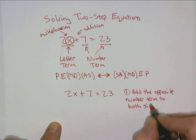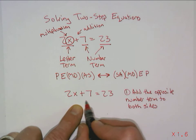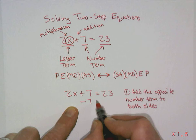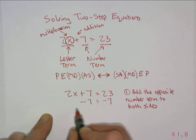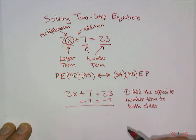And so our first step is to add the opposite number term to both sides. So we want to think in terms of the number term. What's the opposite of plus 7? The opposite of plus 7 would be minus 7. And we're going to add that to both sides.